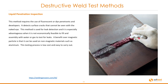Liquid penetration inspection requires the use of fluorescent or dye penetrants and developers. It detects surface cracks that cannot be seen with the naked eye. This method is used for leak detection and is especially advantageous when it is not economically feasible to fill and assemble with water or gas to test for leaks. A benefit over magnetic particles is that it can be used on non-magnetic materials such as aluminum. This testing procedure is low cost and easy to carry out.